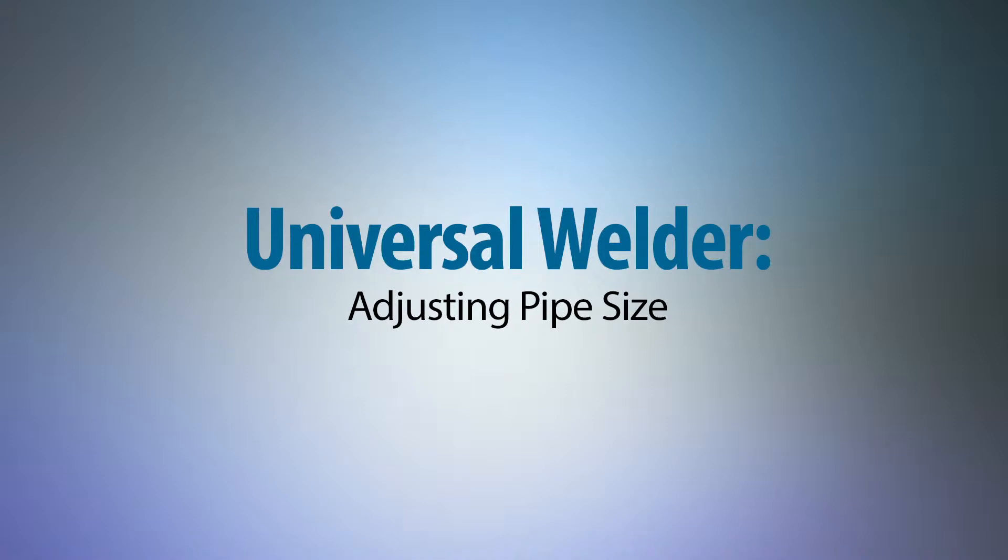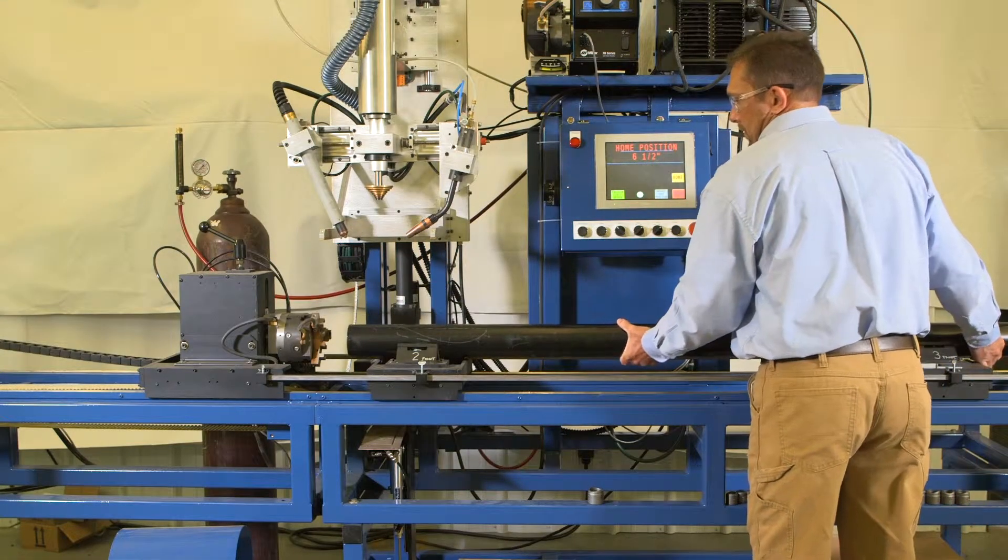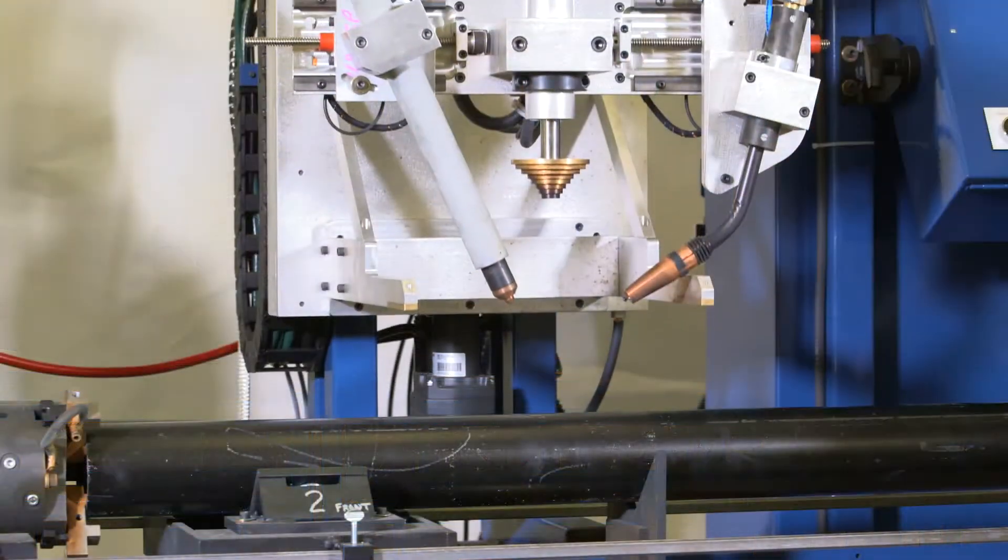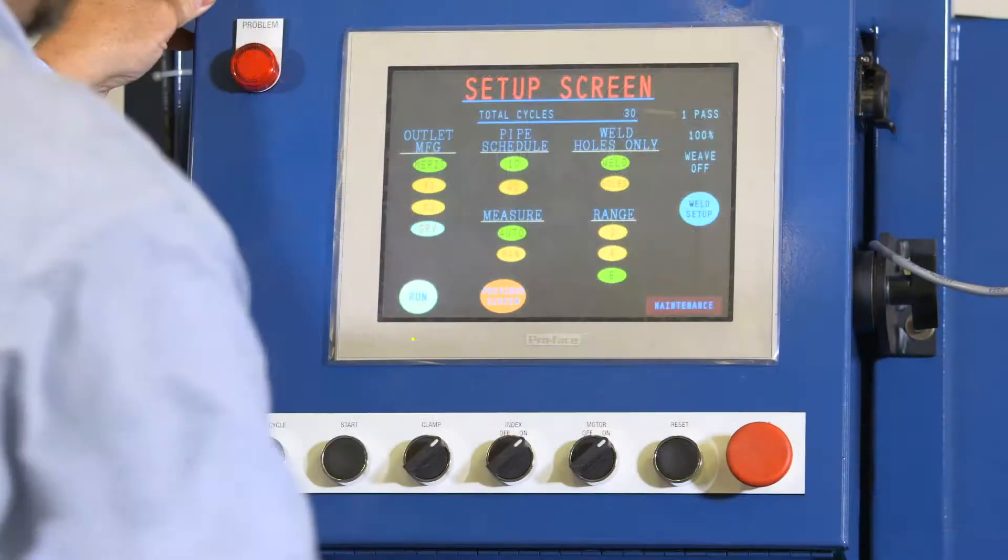Universal welder steps to setting machine adjusting pipe size. Load machine with pipe, start cycle to lower arms on pipe. Pipe sizes should display on screen.